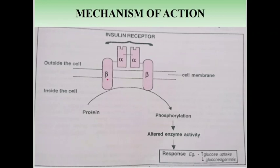Regarding the mechanism of action: insulin acts by binding to a specific receptor. The insulin receptor is a glycoprotein made up of 2 alpha and 2 beta subunits, present on almost all cells in the body. Insulin binds to receptors on the surface of target cells, and this binding stimulates tyrosine kinase activity in the beta subunit. This in turn activates a cascade of phosphorylation and dephosphorylation reactions, which stimulate or inhibit enzymes involved in the metabolic actions of insulin, producing responses such as increased glucose uptake or decreased gluconeogenesis.